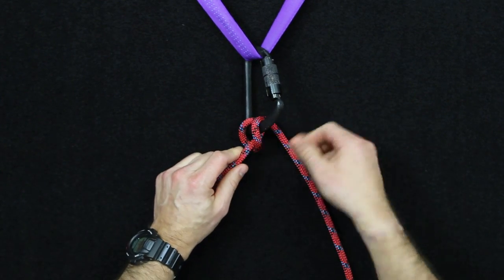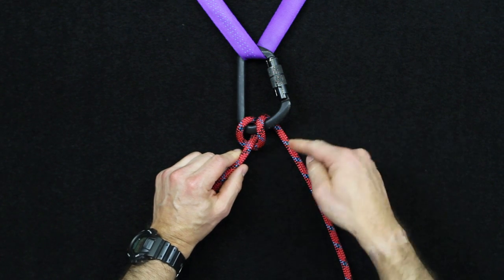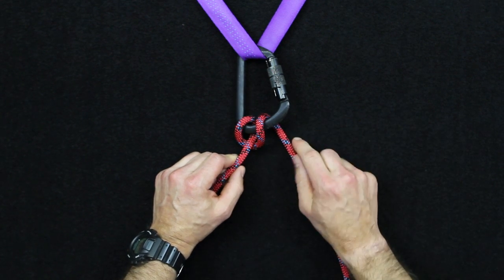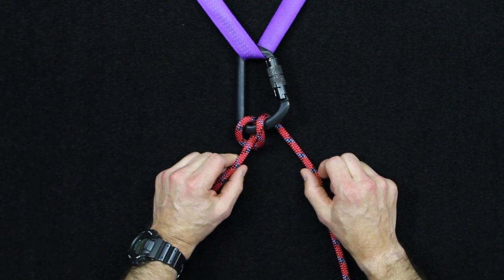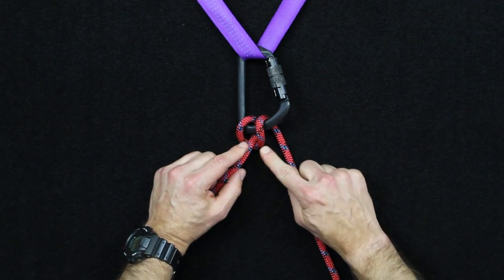Same goes with the belay device as well, just like the ATC. But with this method you have bends in the rope, and obviously bends in the rope create more friction on the outer sheath of a kernmantle style rope.